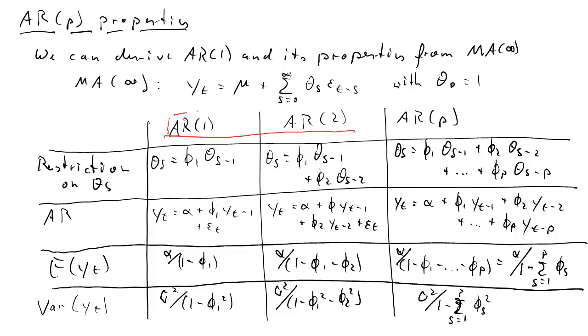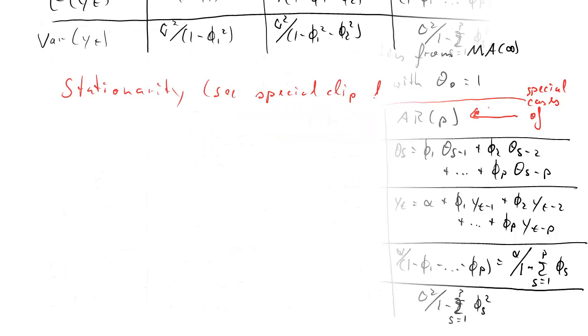So that's the variance. So we can see from these results that the AR(1) and AR(2) are really special cases of the AR(p) process. Okay, so AR(1) and AR(2) are special cases of the AR(p).